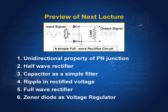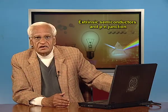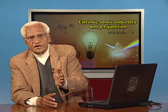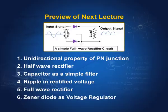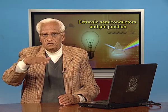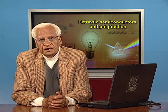In the next lecture, we shall continue with this p-n junction and see how it can be used to rectify voltage — that is, how AC voltage can be converted into DC voltage. We will have a half-wave rectifier and a full-wave rectifier, and we shall see that they have a slight ripple. We will study that ripple, and also an important device — the Zener diode.